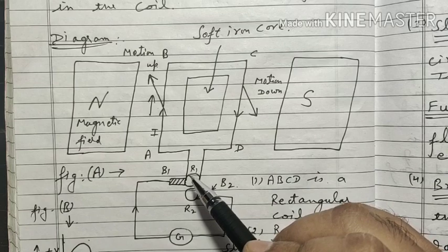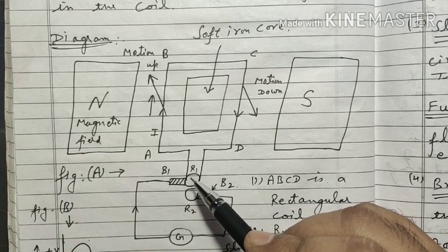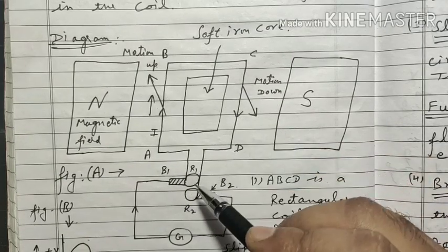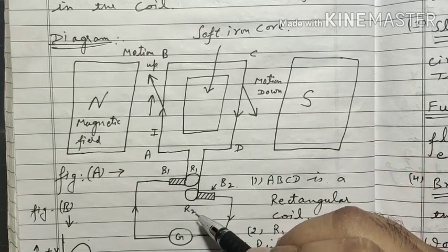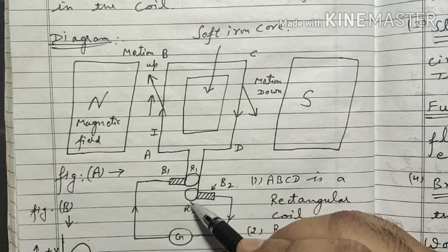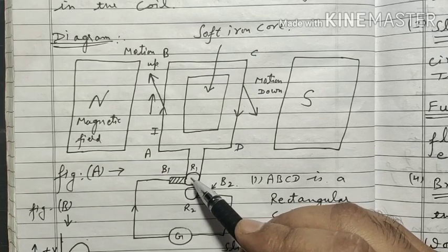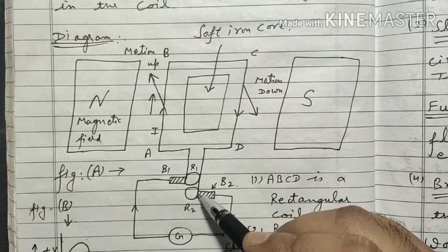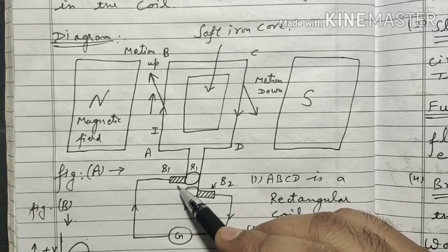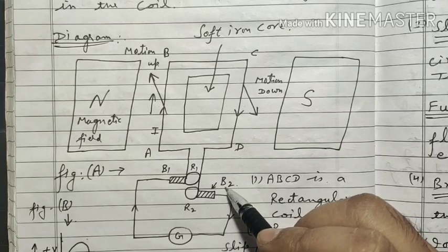This copper wire coil is connected to Ring R1, which is connected with end AB, and Ring R2 is connected with end CD. These rings are circular metallic rings — like a bangle in circular form, which we call rings. R1 is connected with brush B1 and R2 with brush B2. These B1 and B2 are the brushes.